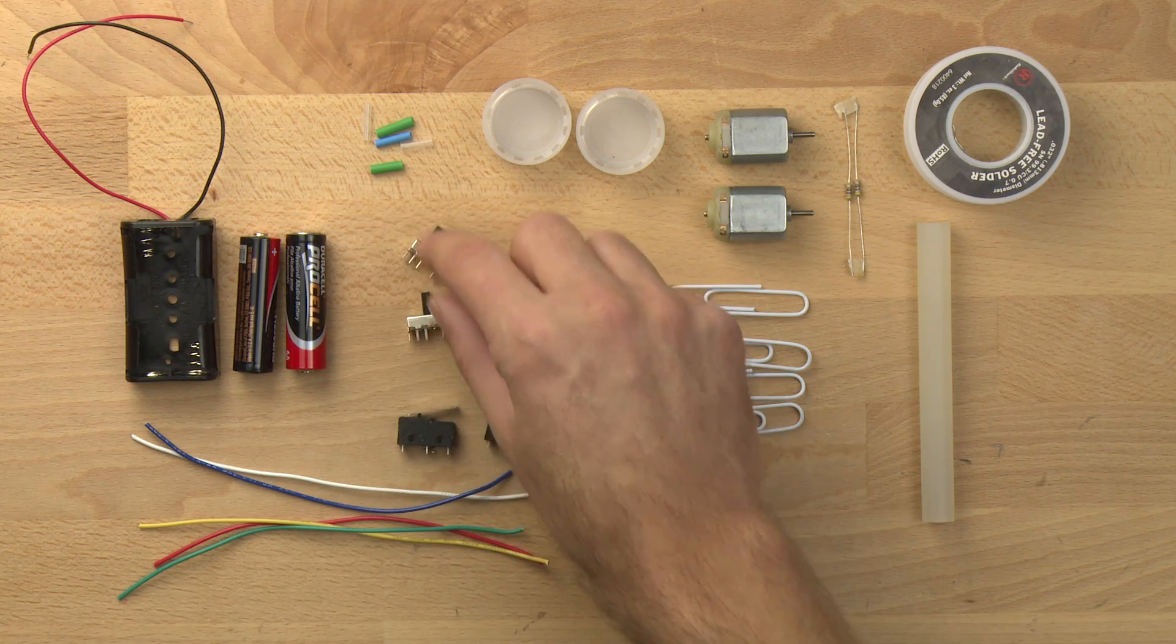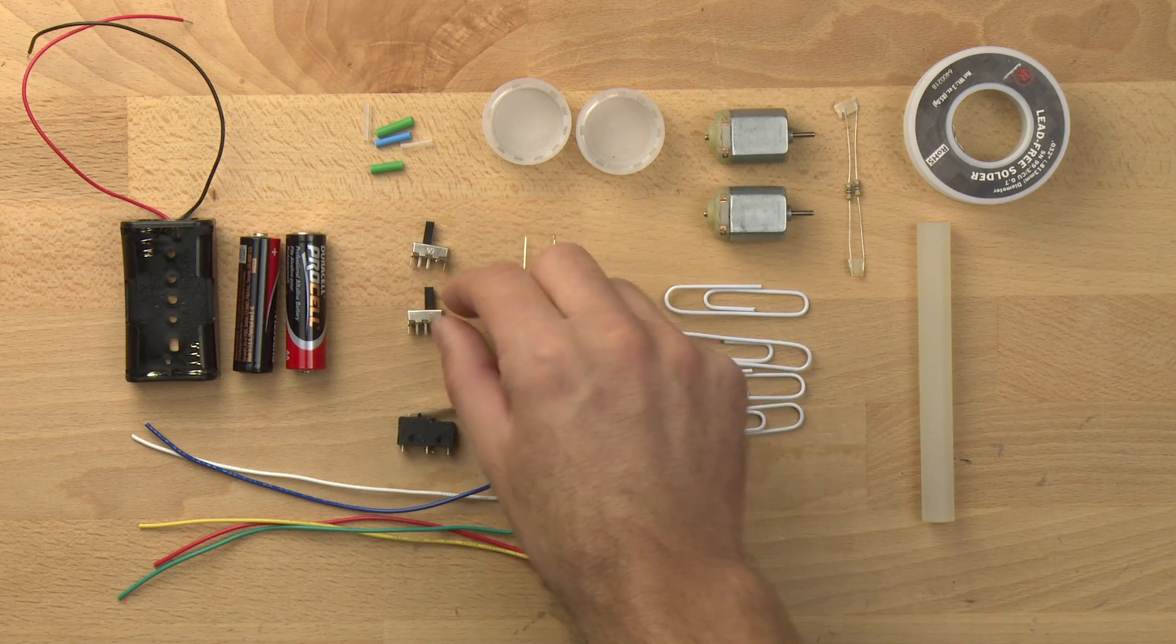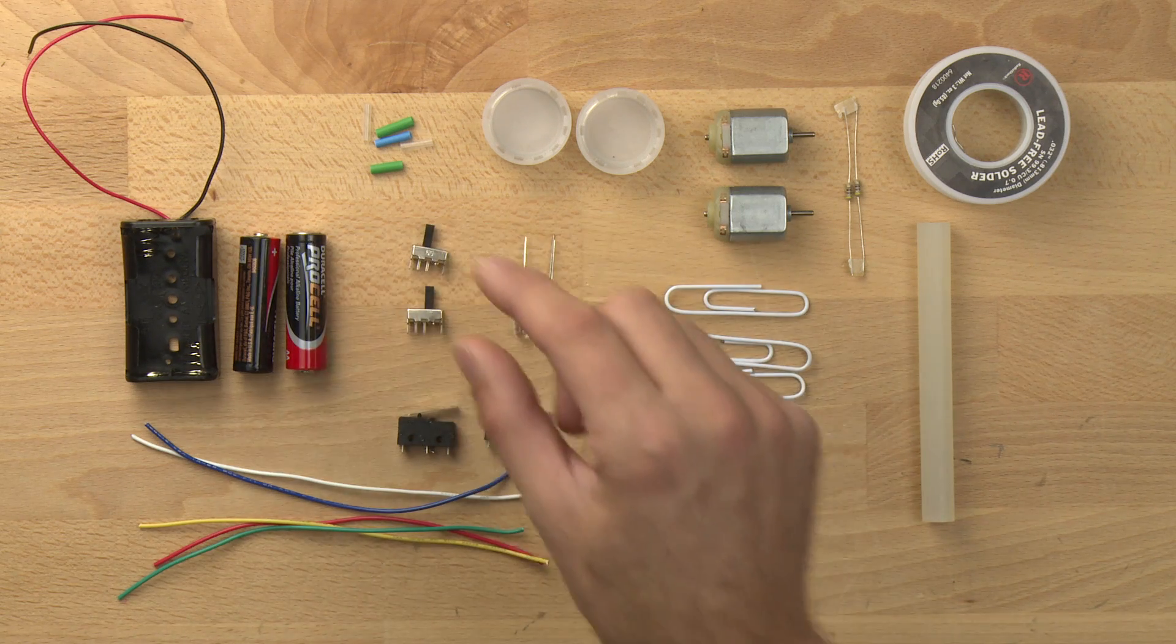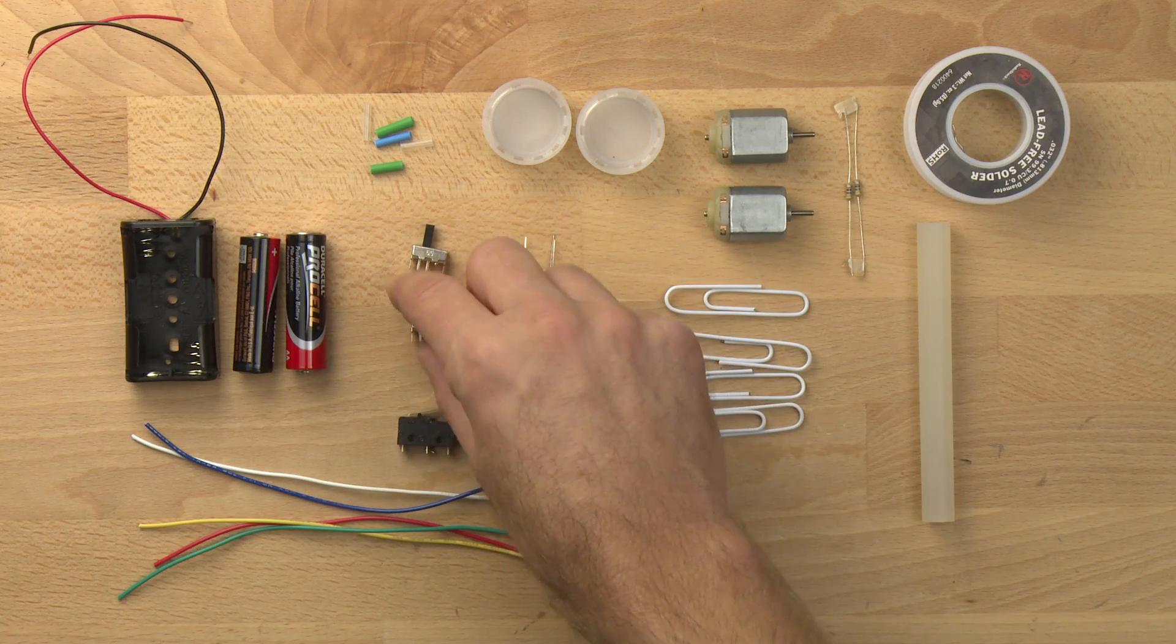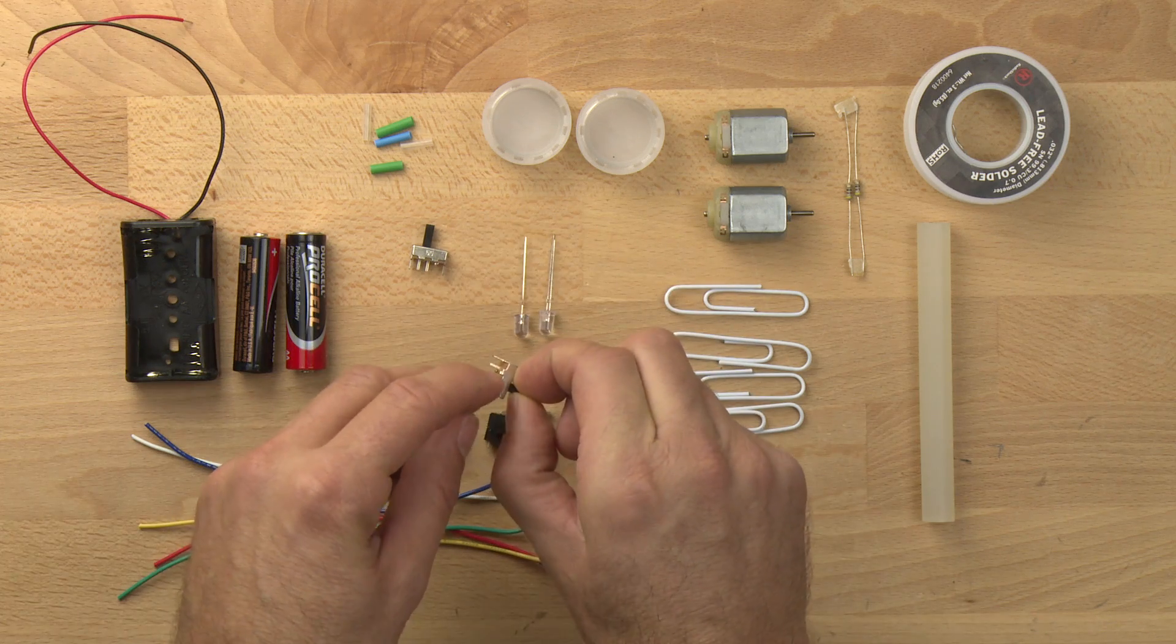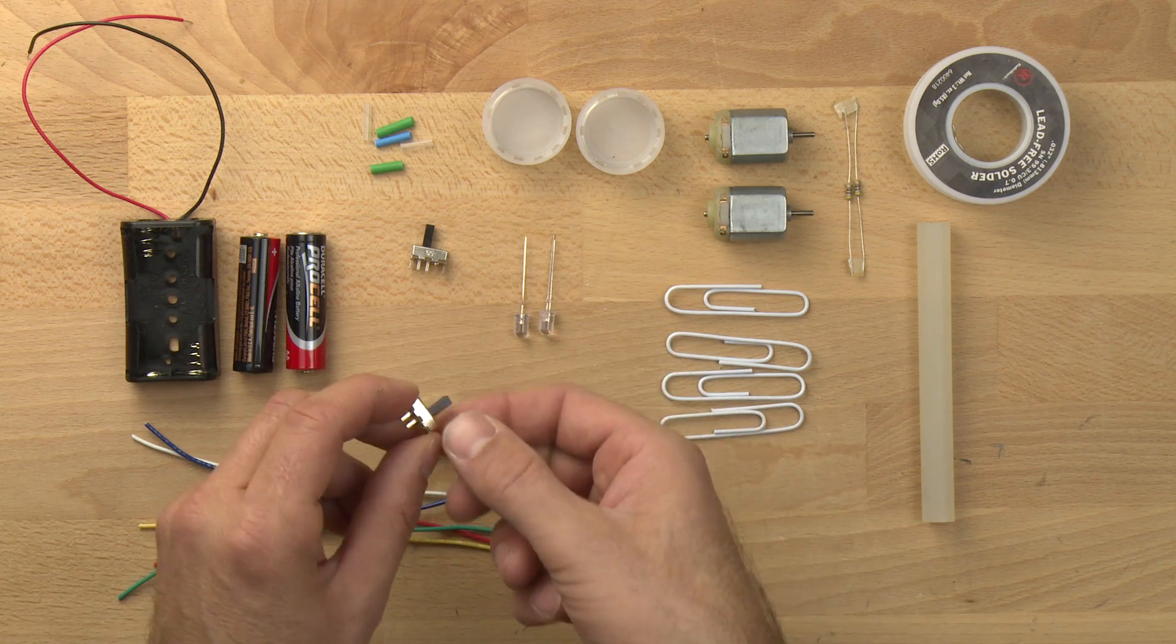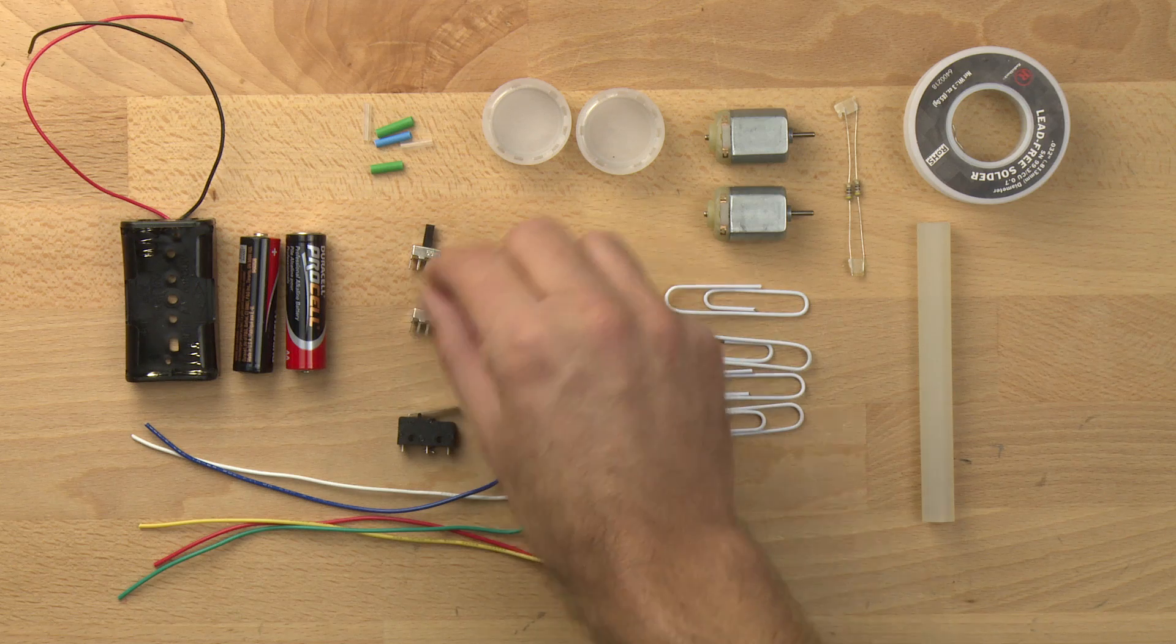And we've got some sliding switches. These are sliding single pole double throw switches. We've bent one of the throws out of the way so it's just a single pole single throw switch. So we're going to use those as on-off switches.